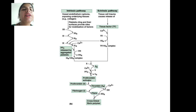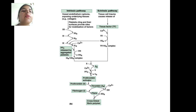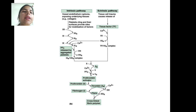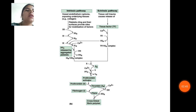PF3 is released by aggregated platelets. A TF–factor 7a complex is formed between the tissue factor and factor 7a. Factor 10a then converts prothrombin activators, and subsequently prothrombin is converted into thrombin, while fibrinogen is converted into fibrin, forming cross-linked fibrin polymer.